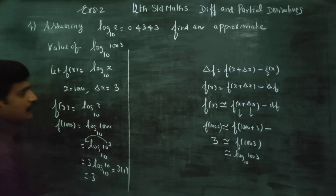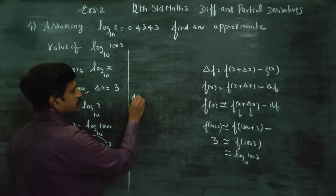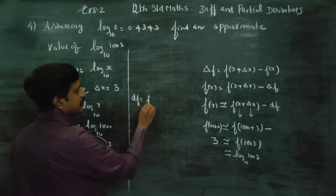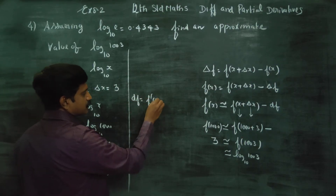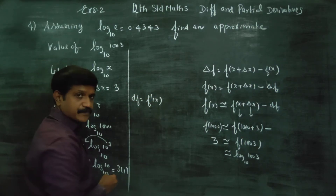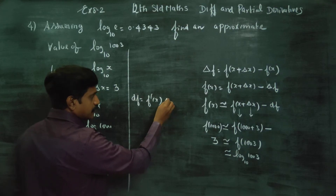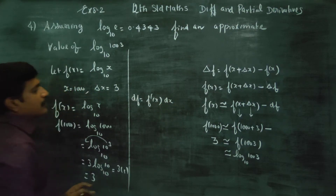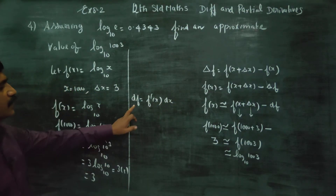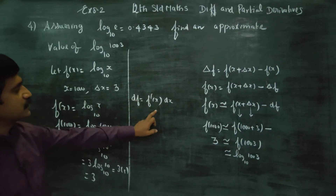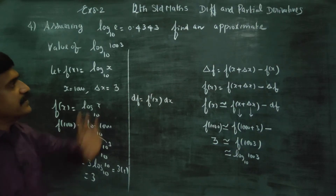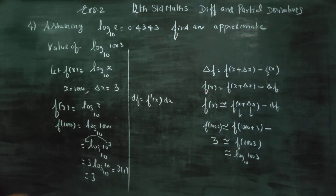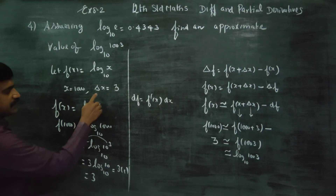What is the rule for df? The df rule is f dash x into dx.